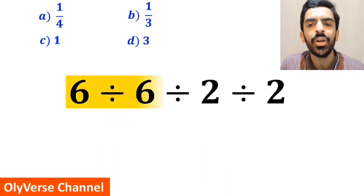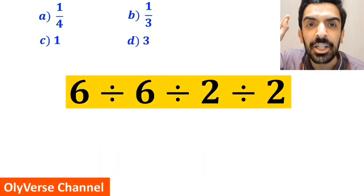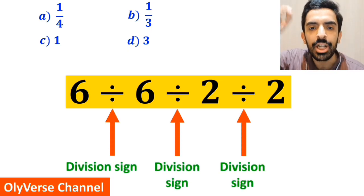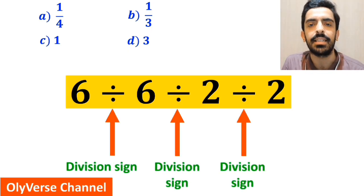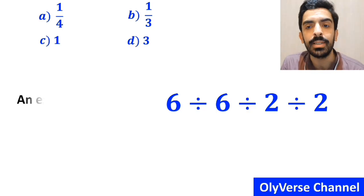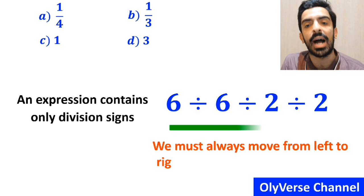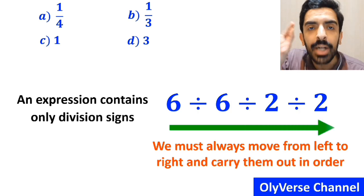Alright, now let me walk you through this step by step how to solve this expression properly. As you can see in the image, in this expression, we have 3 division signs. It's very important to note that when an expression contains only division signs, we must always move from left to right and carry them out in order.